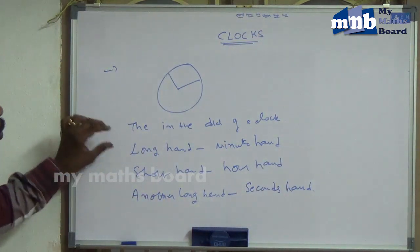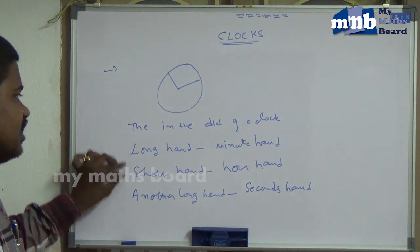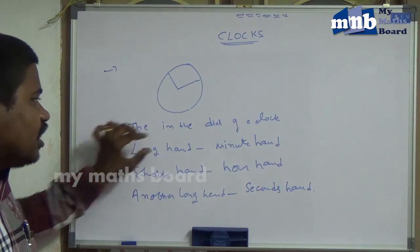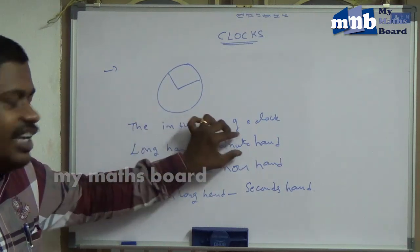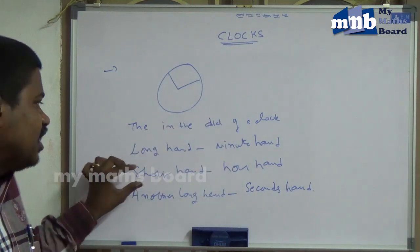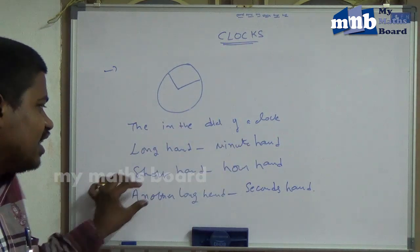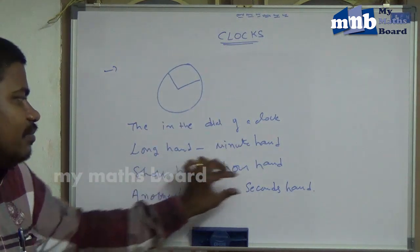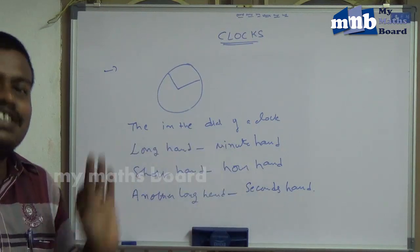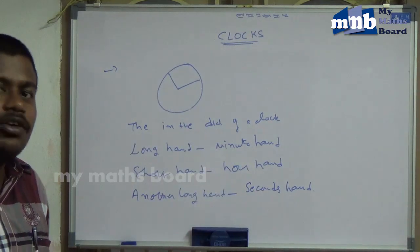In any clock, we observe three things: the long hand indicates the minute hand, the short hand indicates the hour hand, and another long hand indicates the seconds hand.